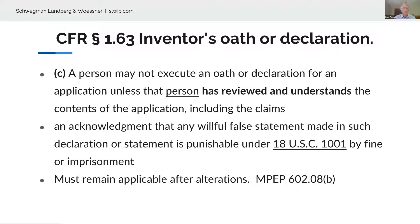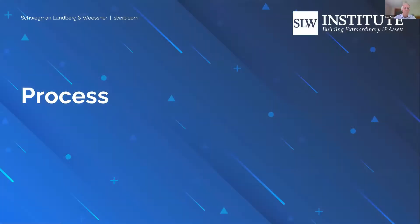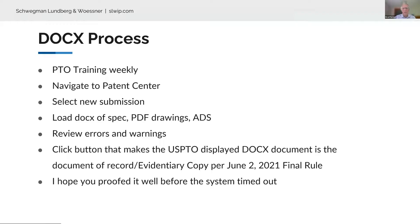Why do we care about what we file being actually what we think we're filing? The inventor declaration — the inventor can face serious consequences if they make a willful false statement about what is being filed. If Docx changes it, that oath must remain applicable after the alterations made by the USPTO system. It may be an unrecoverable error if you don't have support in the application for what you're claiming.